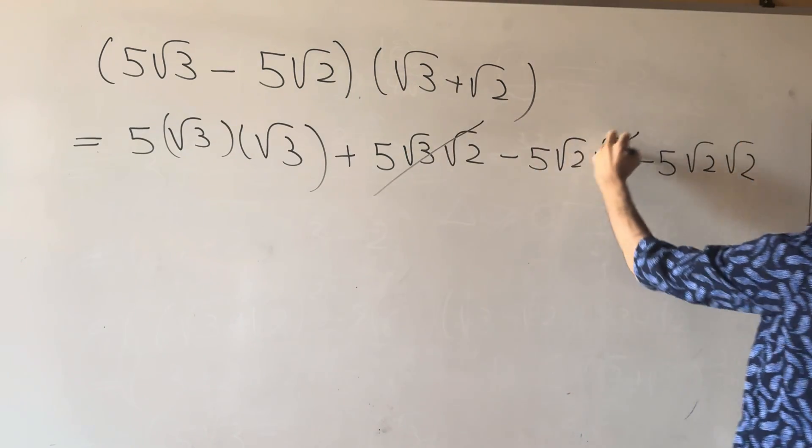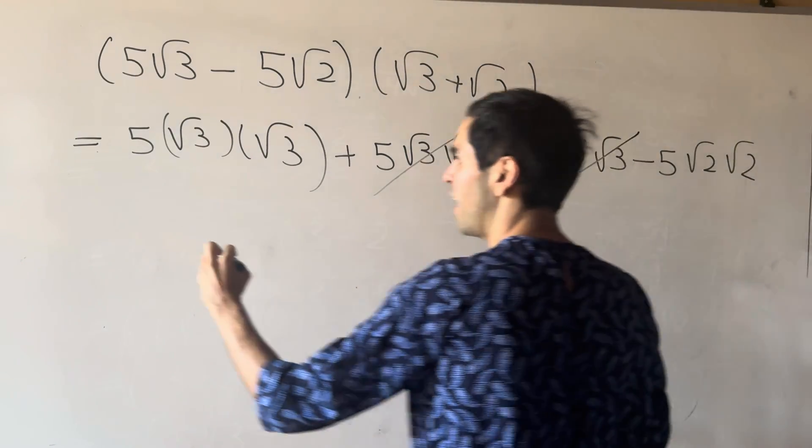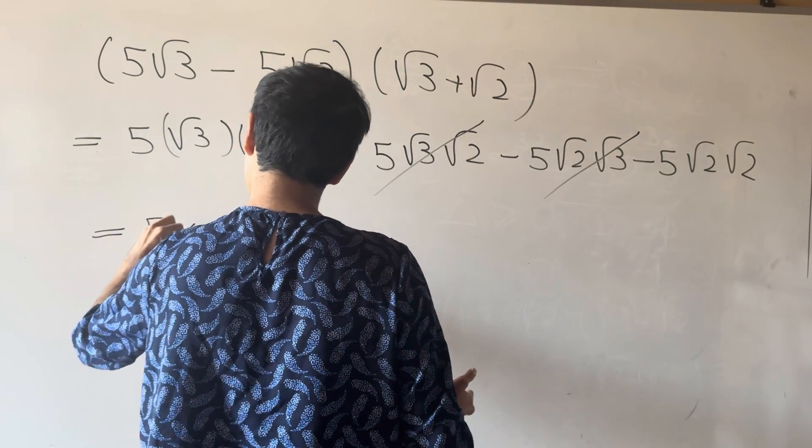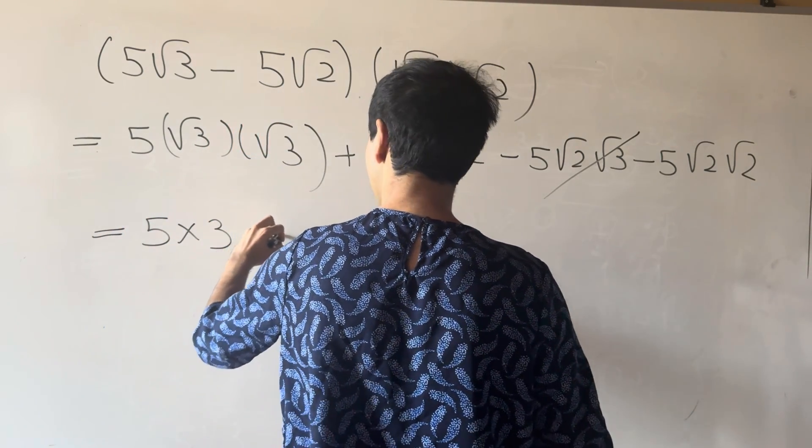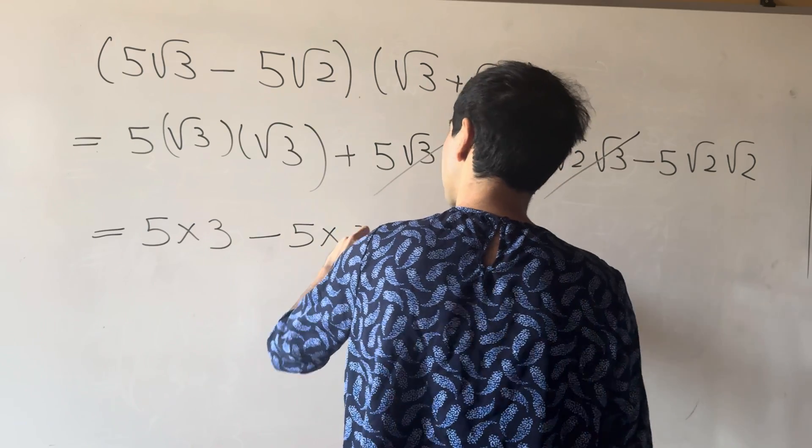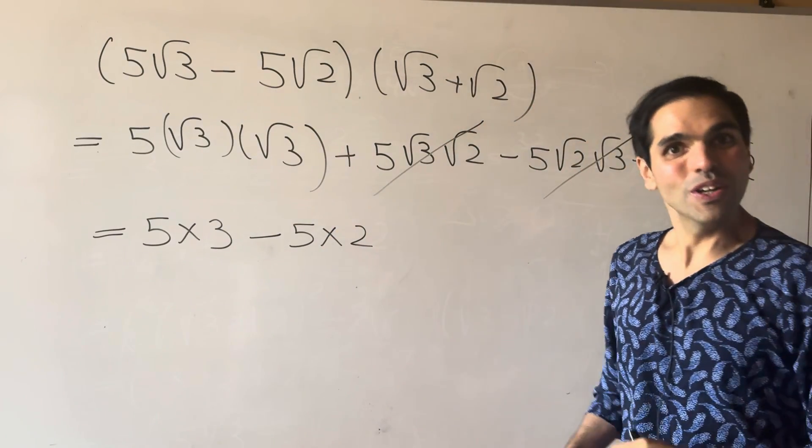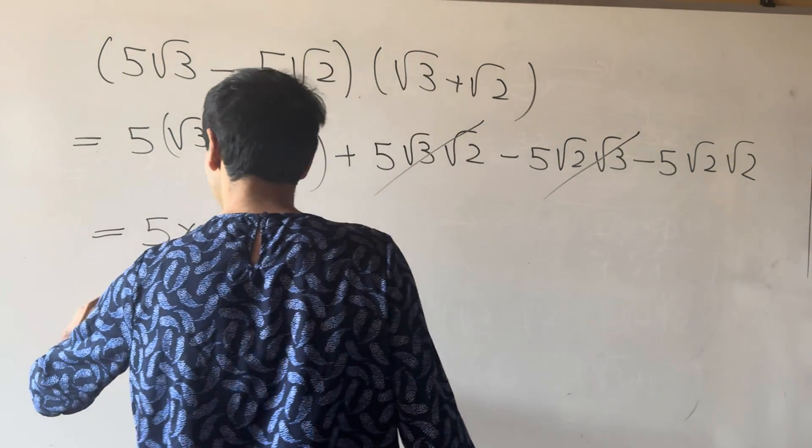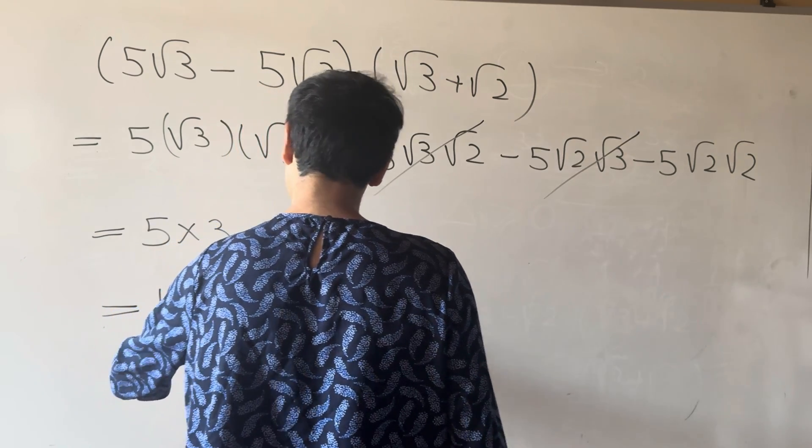Now this cancels out. And then what we get is 5 times 3 minus 5 times 2. But we're good at adding 5, so we get 15 minus 10.